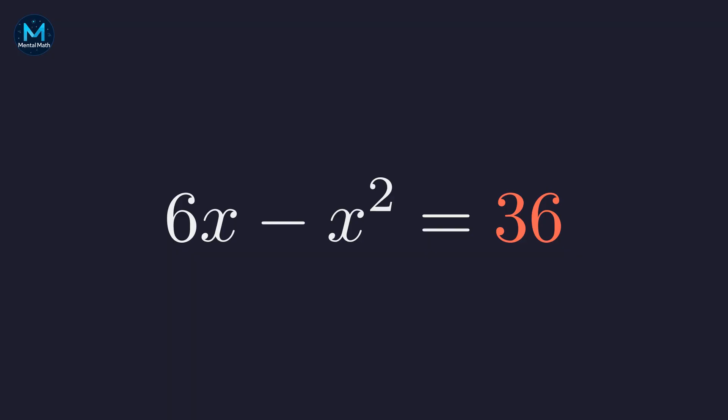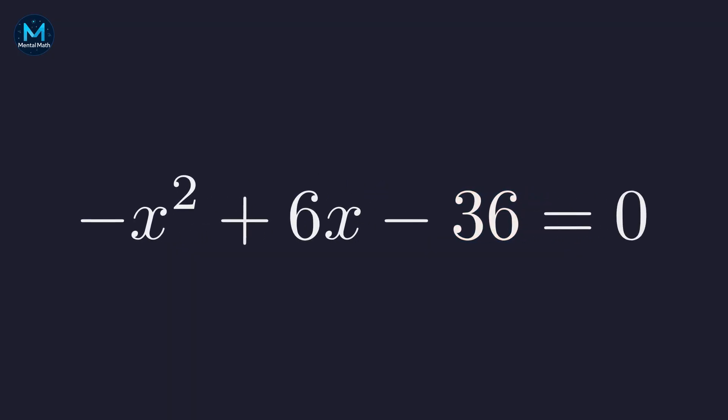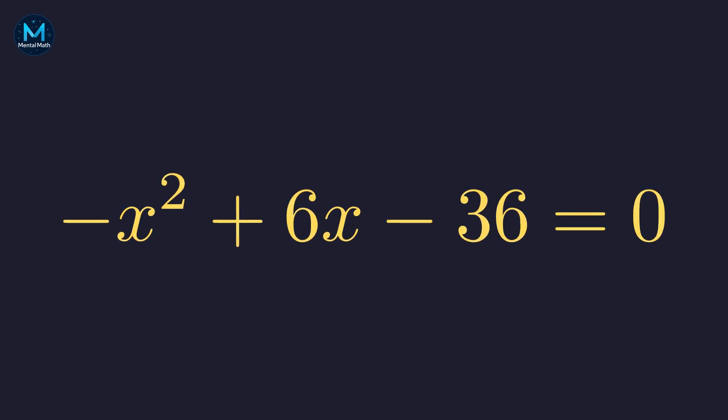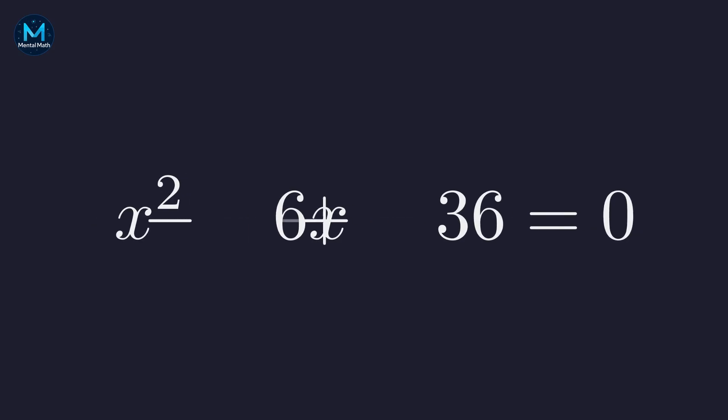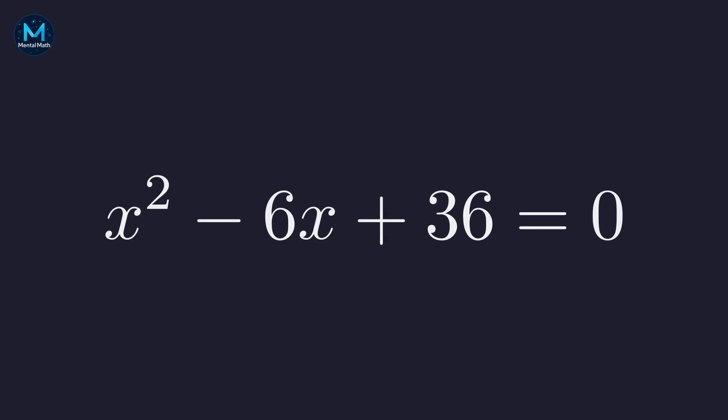To get this into standard form, we need everything on one side. Let's move the 36 over. Subtracting 36 from both sides puts the equation equal to zero. Now, it's conventional to have the x squared term be positive, so let's multiply everything by negative one. And there we have it, our quadratic equation in standard form.